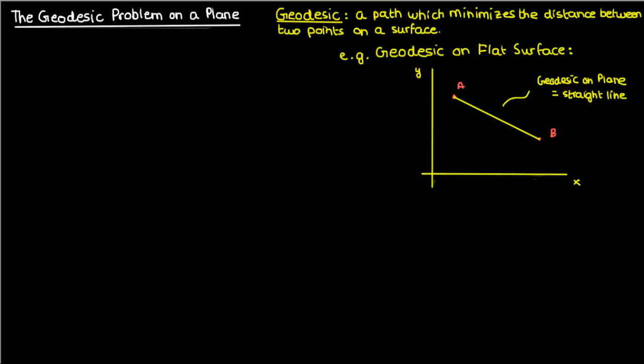Now intuitively you probably already knew that. You probably already knew that the shortest distance between two points on a plane is a straight line. But in this video we're going to mathematically show it using the techniques of variational calculus.